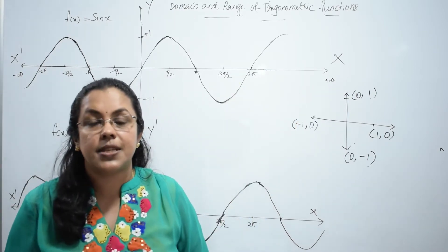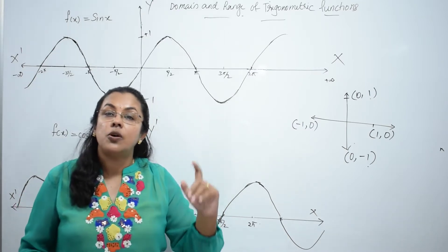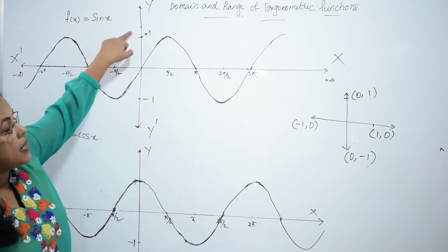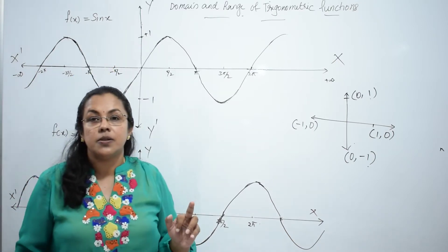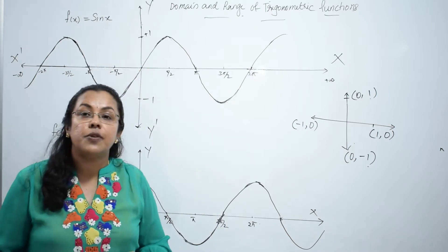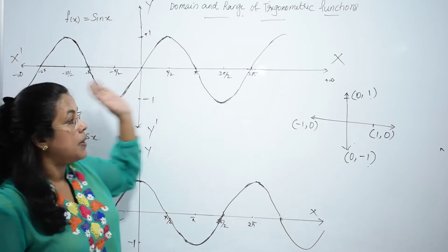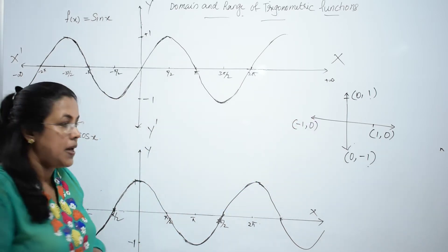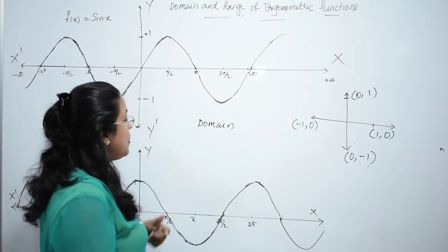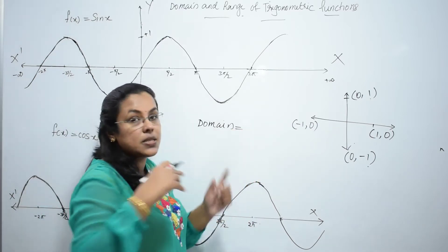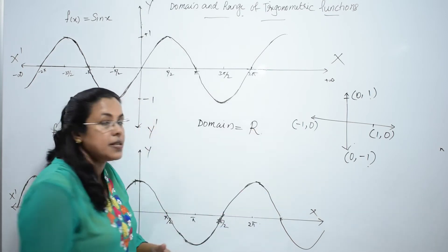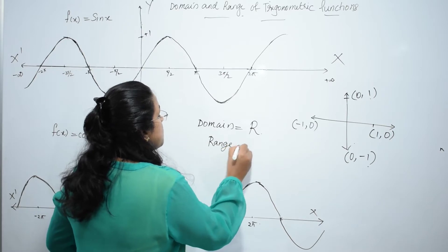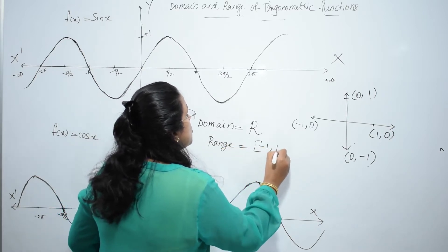What about the range of the sin function? Range is the output — those values of y. Y ranges from minus 1 to plus 1. So, the domain of sin is from minus infinity to plus infinity, which we can also write as the set of real numbers ℝ. And the range of sin function is from minus 1 to plus 1.